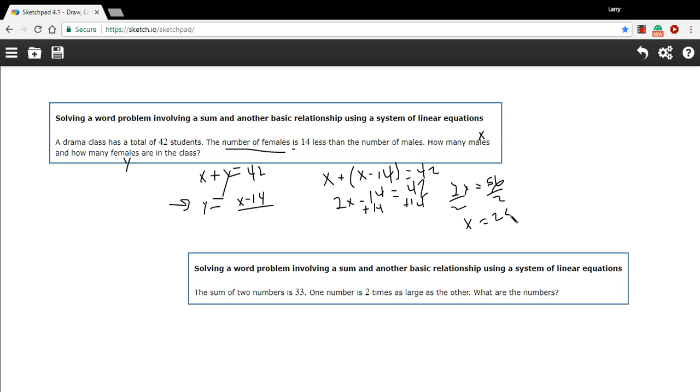We're not quite done though. We found the number of males in the class. We need to know the number of females. And of course, I'll just take this 28 and plug it in back up here. So I would have 28 plus the number of females equals 42. And to find y, I just simply subtract 28.